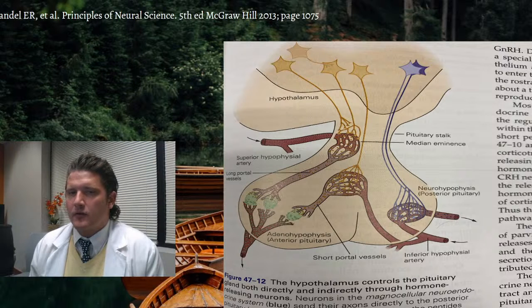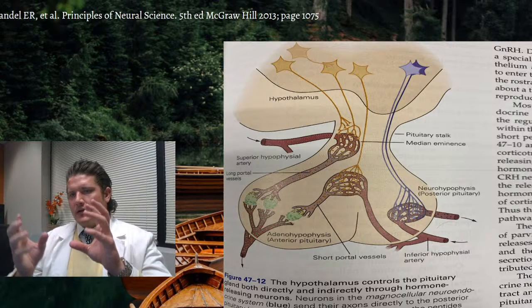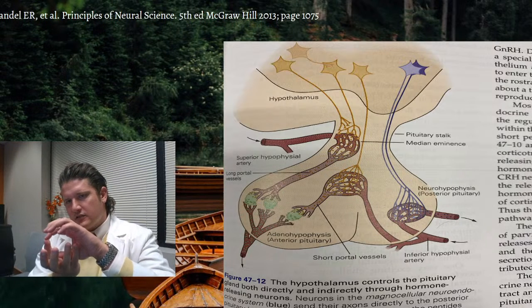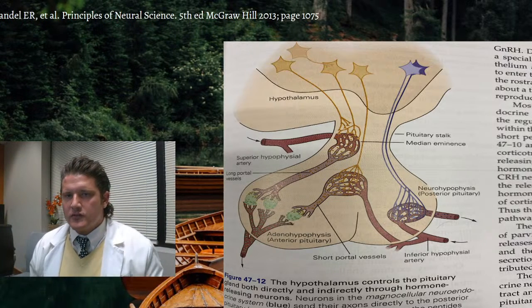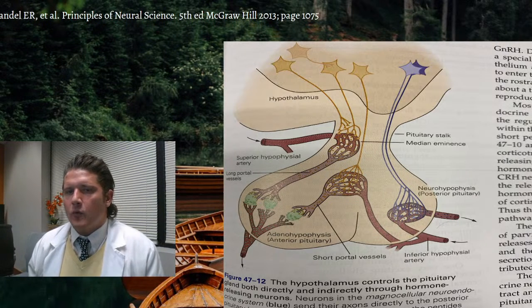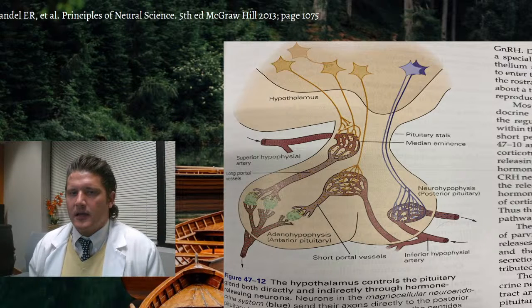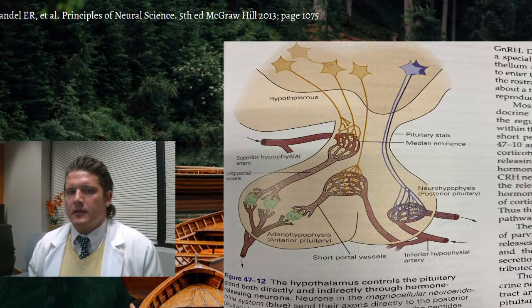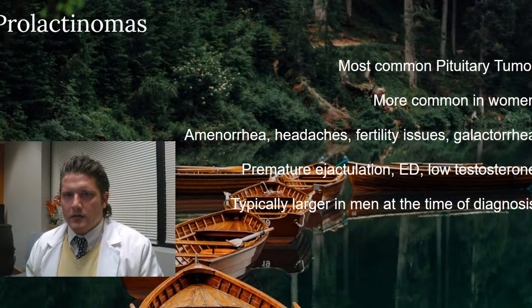Prolactin is secreted from the lactotrophs of the anterior pituitary gland, and lactotrophs are inhibited by dopamine — think of dopamine as the brake pedal for the lactotrophs. If someone has a prolactinoma growing and it compresses or stretches the pituitary stalk, that reduces dopaminergic inhibition and can cause the prolactinoma to grow even more. Neuroleptic medications used for psychiatric disorders like schizophrenia, which inhibit dopamine signaling, can also facilitate excessive prolactin secretion.